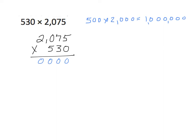Now, multiplying from the tens place, I put in my zero because I'll have no ones. 3 times 5 is 15 — regroup 1. 3 times 7 is 21, plus 1 is 22 — regroup 2. 3 times 0 is 0, plus 2 is 2. And 3 times 2 is 6. Moving to the hundreds place, I put in zeros in both the ones and tens places since there will be no ones and no tens. 5 times 5 is 25 — regroup 2. 5 times 7 is 35, plus 2 is 37 — regroup 3. 5 times 0 is 0, plus 3 is 3. And 5 times 2 is 10.